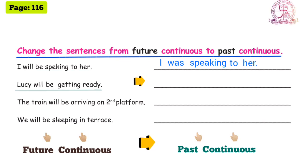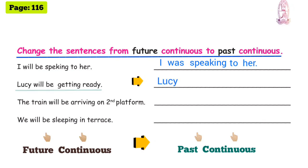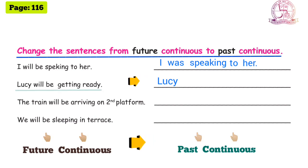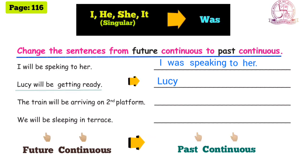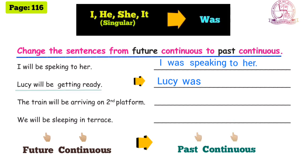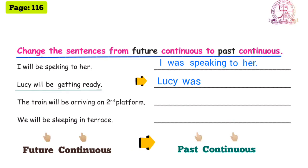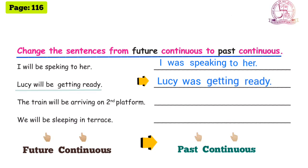Next sentence: 'Lucy will be getting ready.' Wait — we need to convert to past continuous tense. Subject: Lucy — she is singular. So auxiliary verb: 'was'. Present participle: 'getting'. So: 'Lucy was getting ready.'